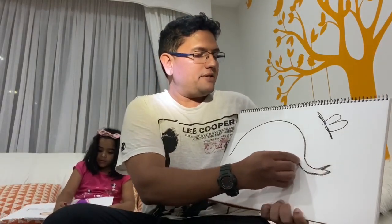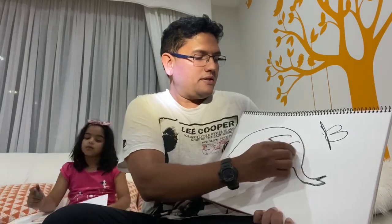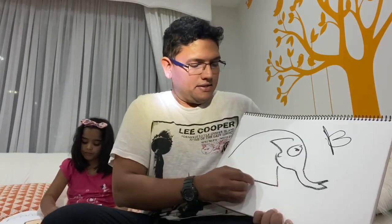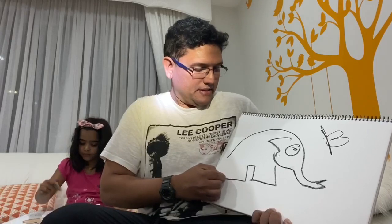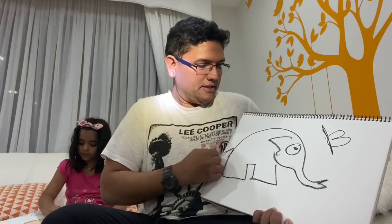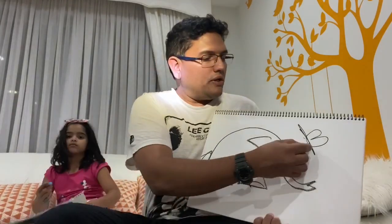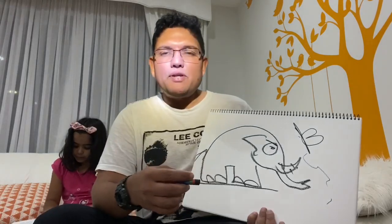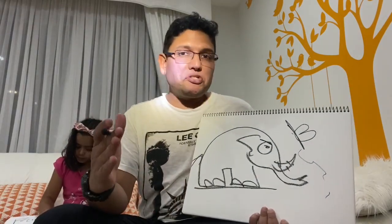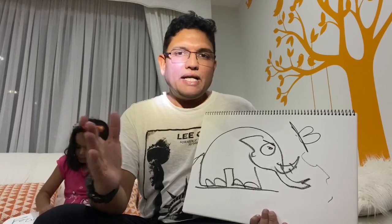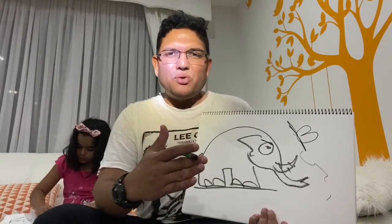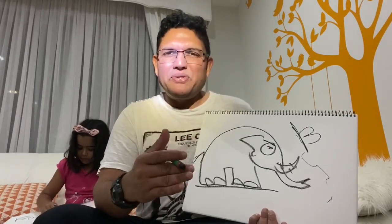So we have learned that the Malayalam for elephant is Ana — that was the second word we learned. He saw a huge elephant, so I'm drawing a big elephant. It's got a long trunk. The Eecha was just flying around and it saw this huge elephant, and the huge elephant was very arrogant and proud.